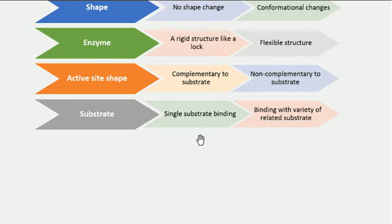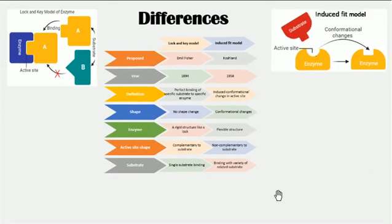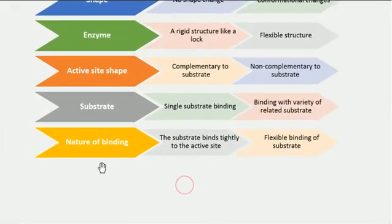The next difference concerns the substrate. The Lock-and-Key model explains single substrate binding — one substrate binds with one enzyme, and it does not explain binding of more than one substrate to a single enzyme. However, binding with a variety of related substrates can be explained by the Induced Fit model. Regarding the nature of binding, the substrate binds tightly to the active site in the Lock-and-Key model, while flexible binding of the substrate takes place in the Induced Fit model.